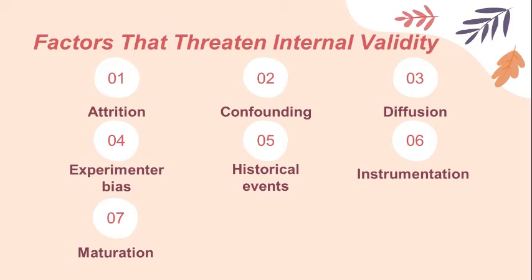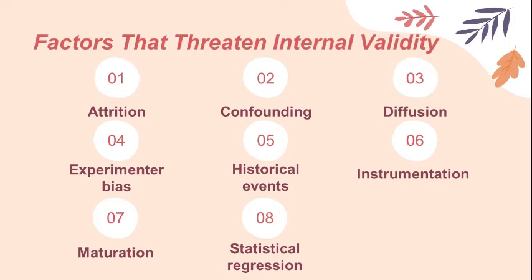The eighth is statistical regression — the natural effect of participants at extreme ends of a measure falling toward the mean in a certain direction just due to the passage of time, rather than the effect of an intervention, particularly where groups have been selected on the basis of their extreme scores.